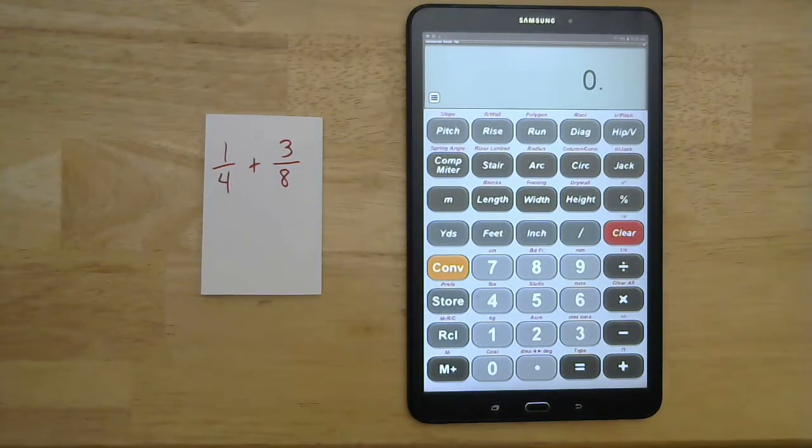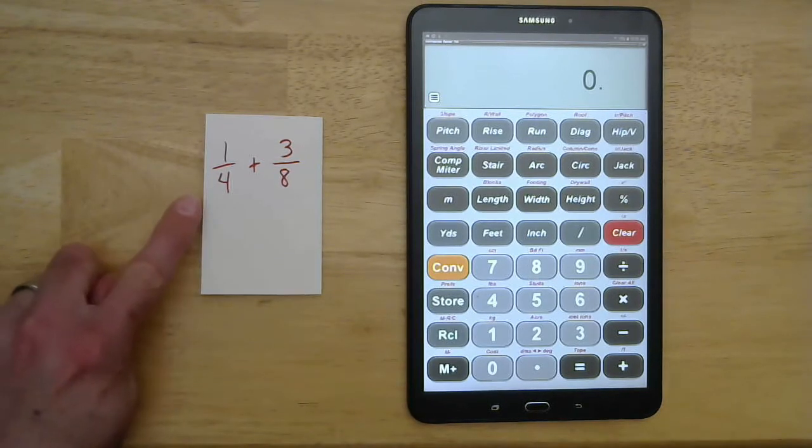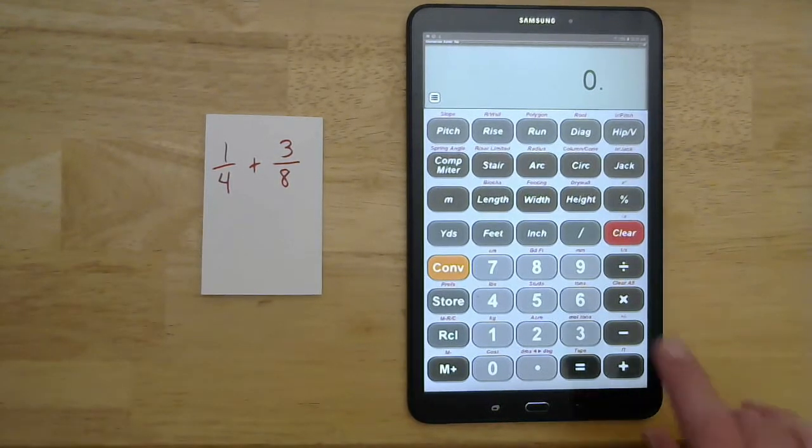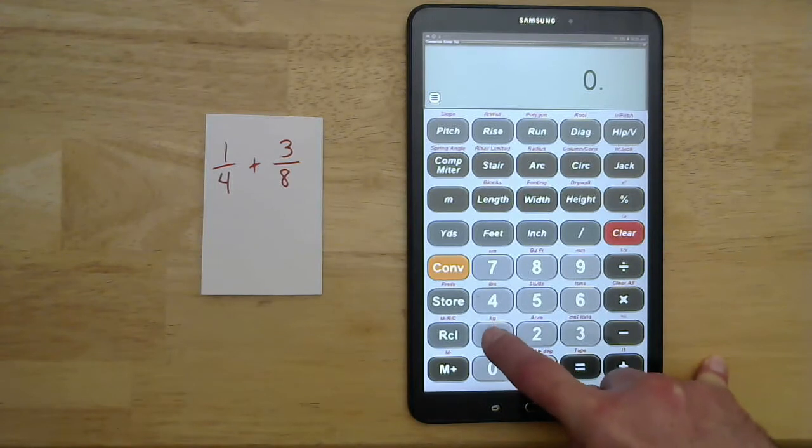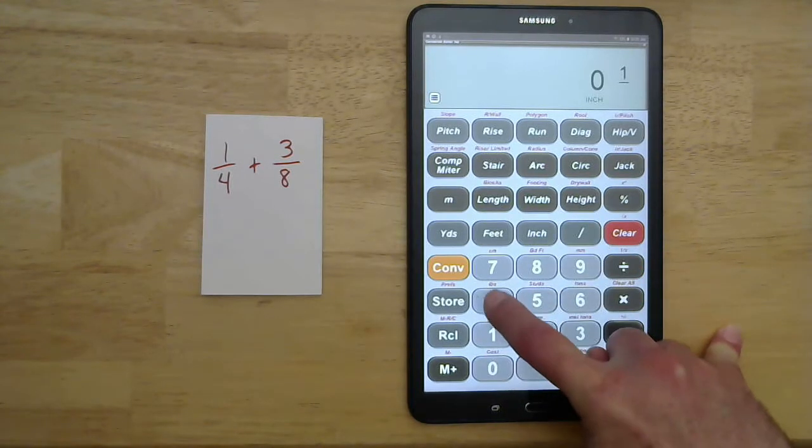I want to show you how to do some basic fraction problems, just how to enter the stuff into the calculator. So I'm going to do this problem: one-fourth plus three-eighths. The way I do that is I do one, fraction bar, four.